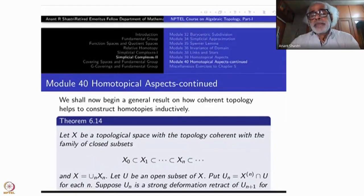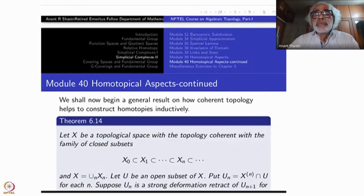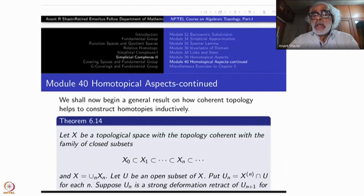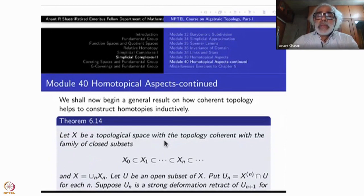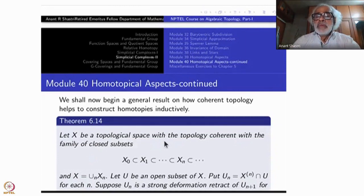Last time we considered somewhat easy types of homotopic properties — easier results, but they are all important. Today we will go a little deeper into these aspects. We have to appeal to the coherent topology more clearly in defining homotopies also inductively. I would like to present a result applicable to any space with this coherent topology, and then we will use it for simplicial complexes.